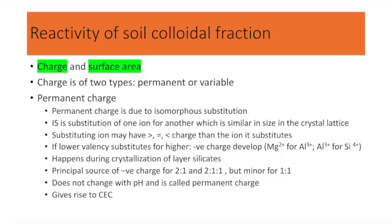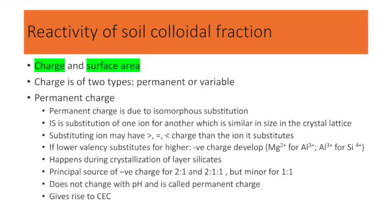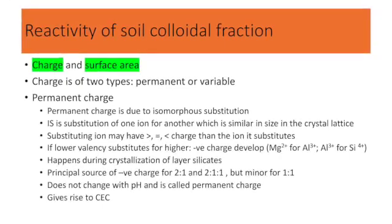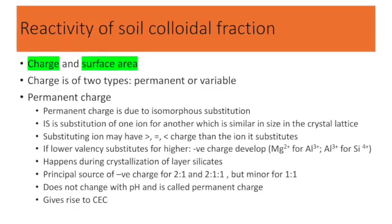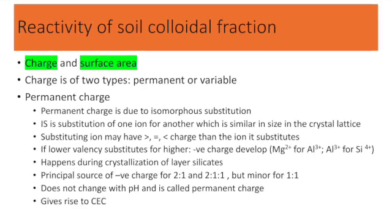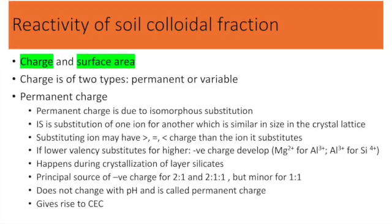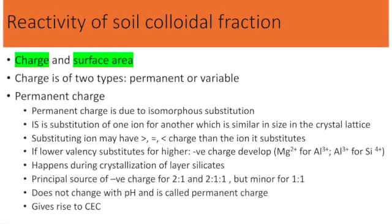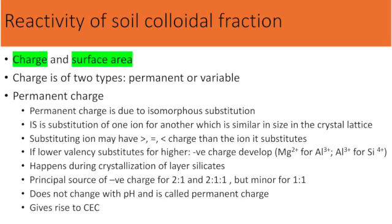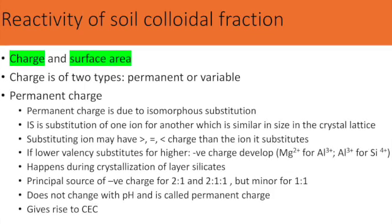Now let us examine the components that give reactivity to soil: charge and surface area. Charge is of two types — permanent or variable. Permanent charge is due to isomorphous substitution. It occurs when one ion substitutes for another inside the crystal lattice. If a lower-valency ion substitutes for a higher-valency ion, negative charge develops. For example, if magnesium substitutes for aluminium, or aluminium substitutes for silicon, negative charge develops. This happens during crystallization of layer silicates and is the principal source of negative charge for 2:1 and 2:1:1 type minerals, but of minor importance for 1:1 type minerals. This charge does not change and is therefore called permanent, and it gives rise to cation exchange capacity.